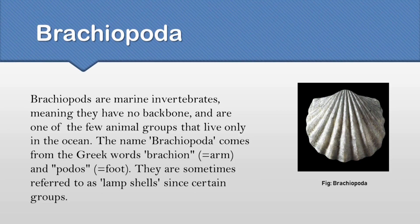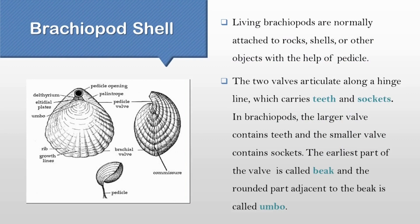Brachiopod shell. The heart part of the organism is the shell. Brachiopods have two valves and they are tied along with a hinge line. The larger valve contains teeth, meanwhile the smaller valve contains sockets. The earliest part of the valve is the beak. Adjacent to the beak, the rounded part is known as Umbo. Through a hole named pedicle foramen in one of the valves extends a fleshy ligament known as pedicle. Pedicle is used by living Brachiopods to attach itself to the seafloor.